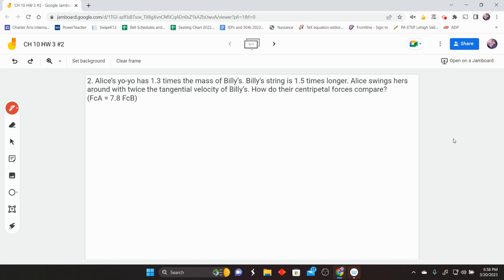So this is a ratio problem, but it's a little bit trickier than some of the ones we've done, so I thought I'd make a little helper video to show you what's going on. We've got Alice with a yo-yo, Billy's got a yo-yo. They're a little bit different in mass and string length and tangential velocity. They're going to swing them around, and we're looking for how do their centripetal forces compare.